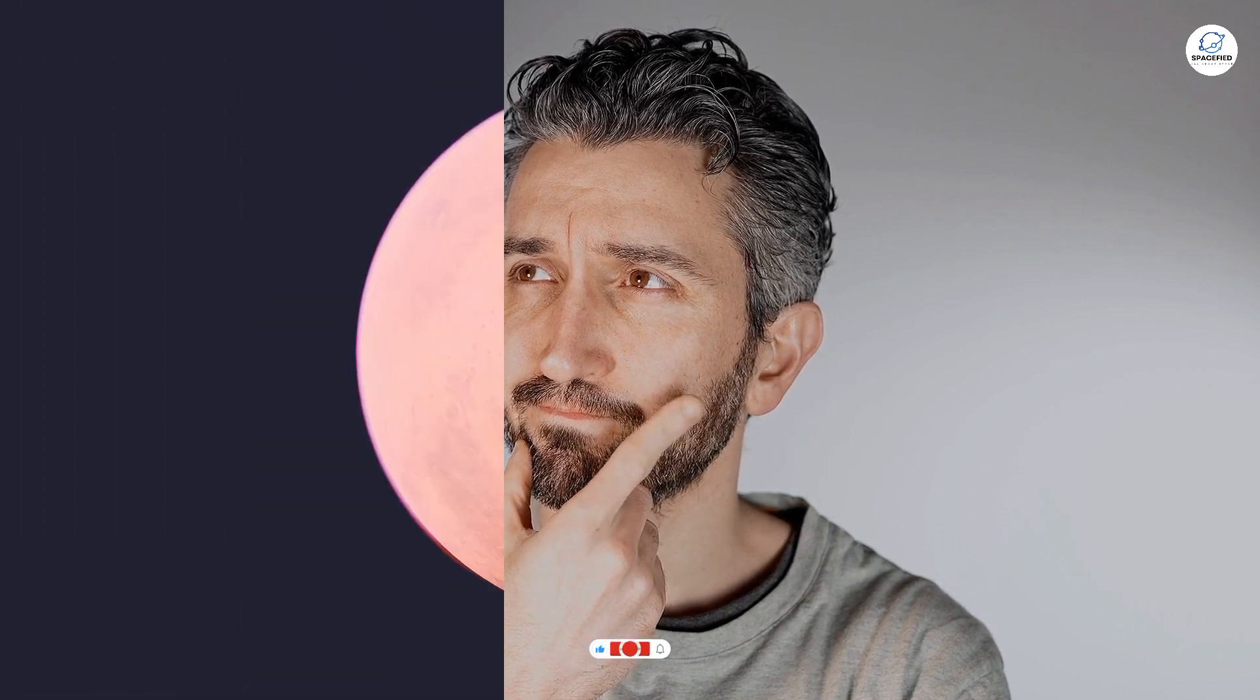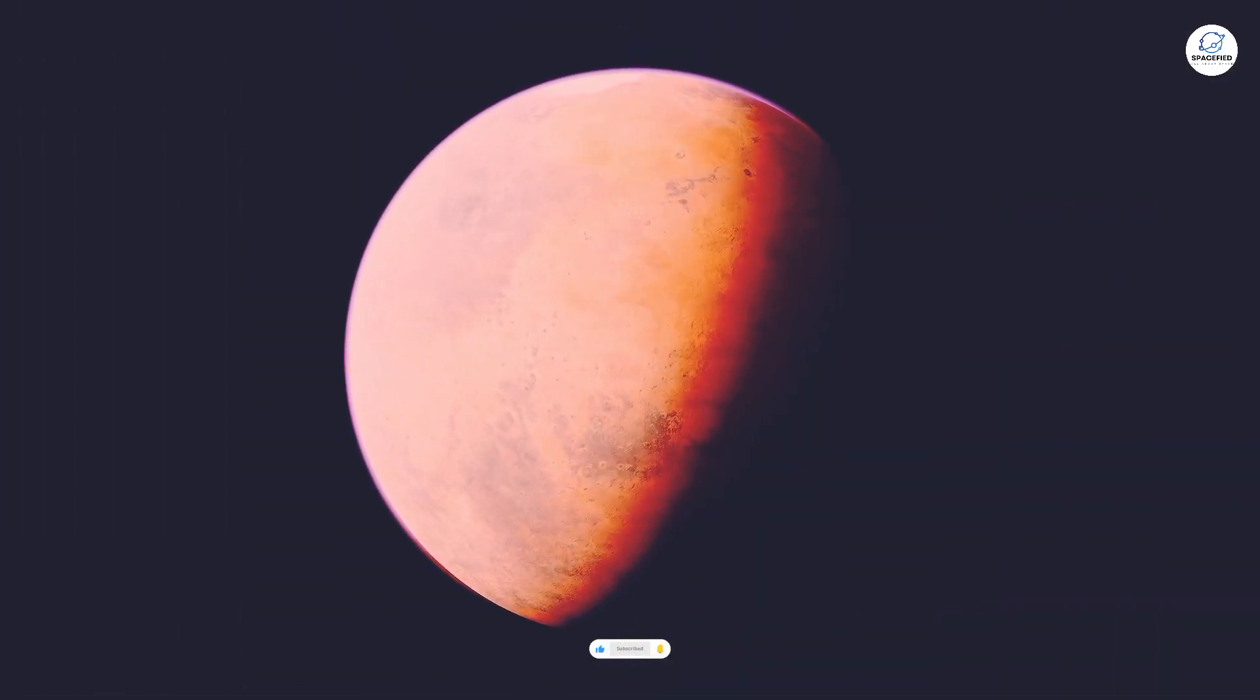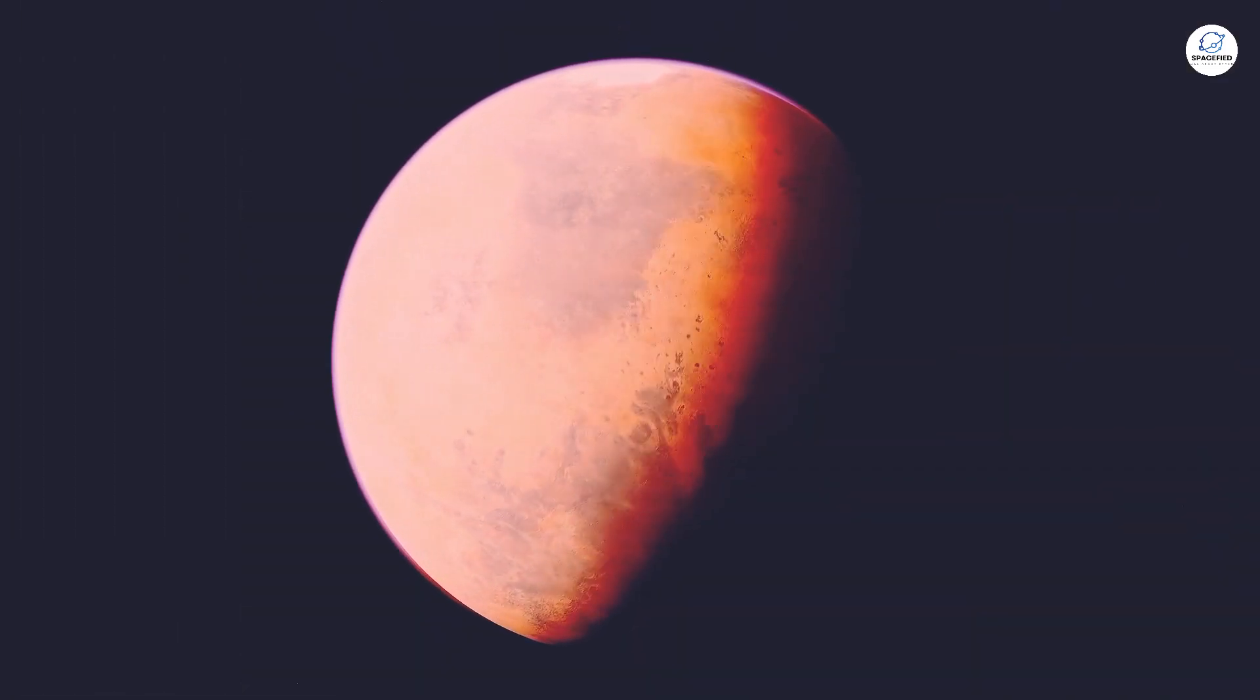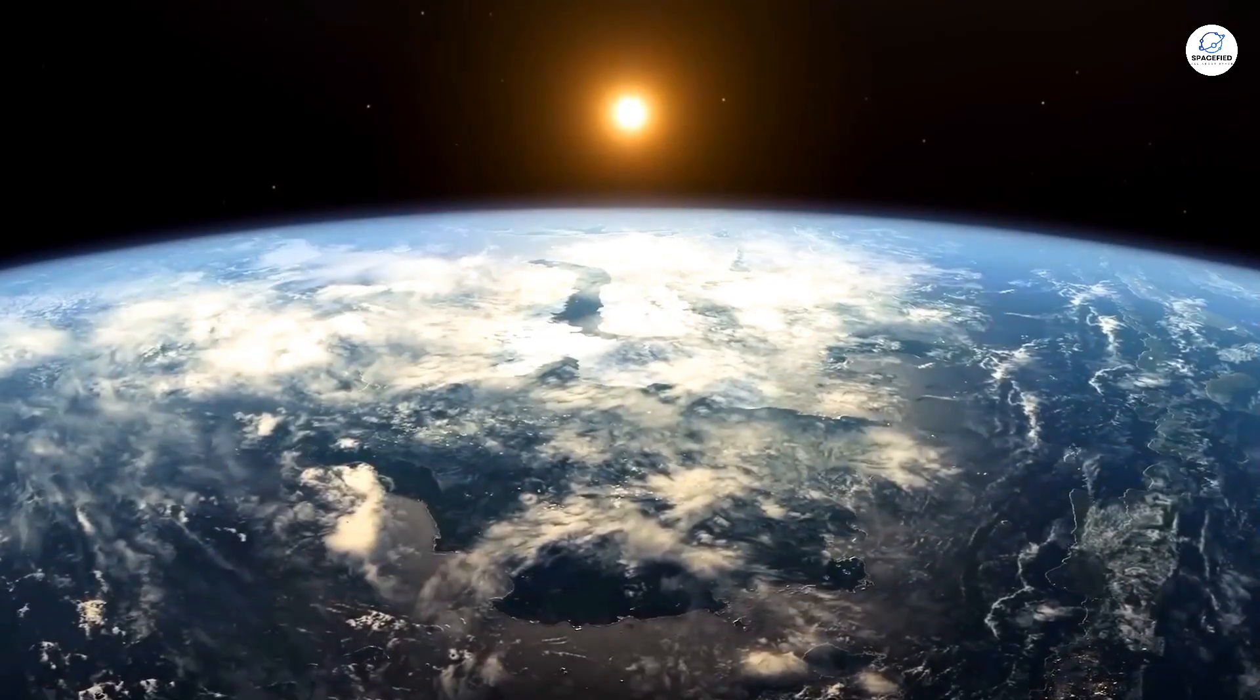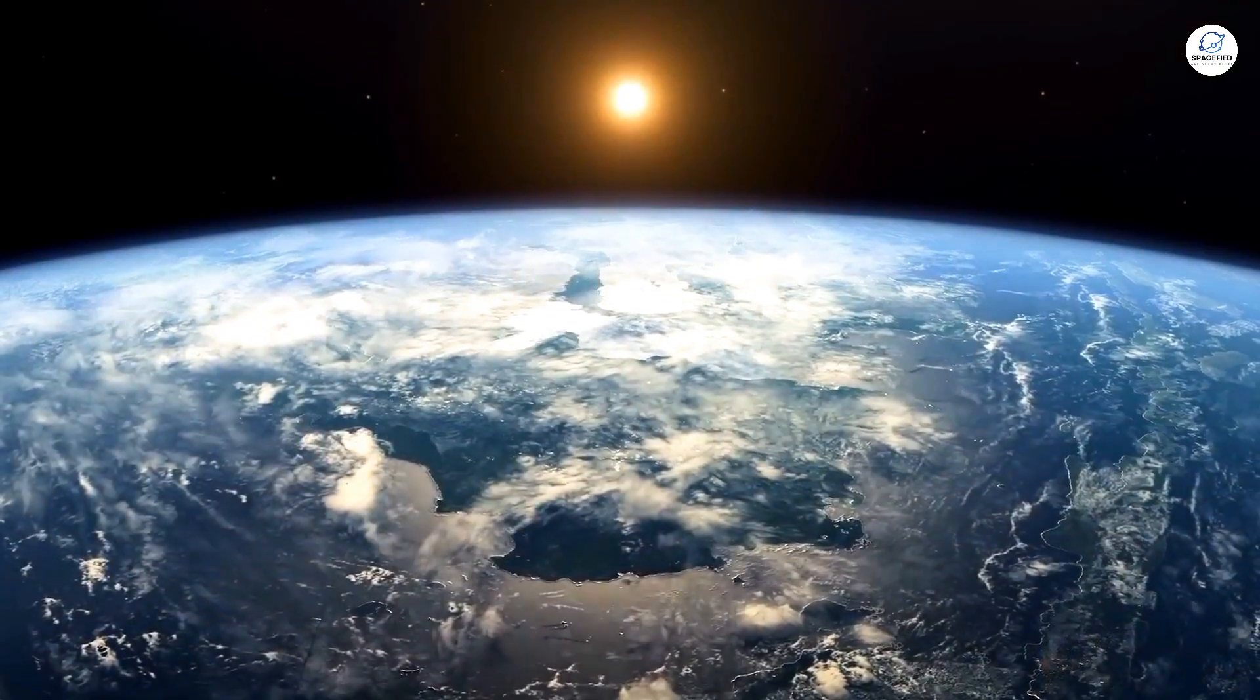The answers remain elusive, but one thing's for sure. Gliese 504b is a cosmic oddity that challenges our understanding of planetary science. Finally, let's talk about GJ 1214b, a water world unlike anything in our solar system.